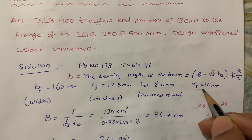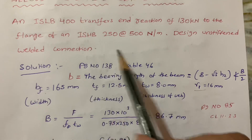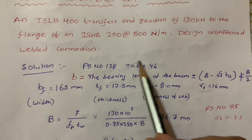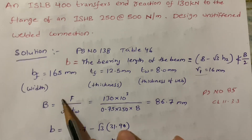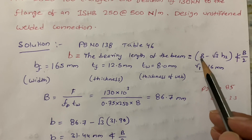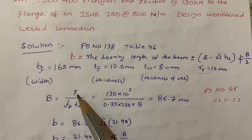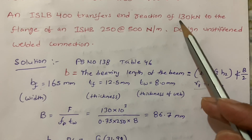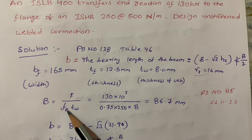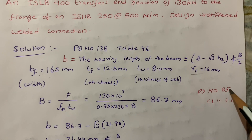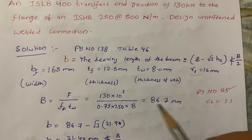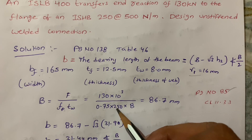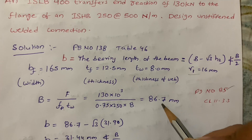R1 is the radius of the root for ISLB 400, available in the steel tables book. For the b value, the formula is: force divided by Fp into thickness of the web. The force is 130 kN as given, and Fp (permissible stress) from page 85, clause 11.3.3 is 0.75 into FY, which equals 0.75 × 250. The web thickness is 8 mm, giving a b value of 86.7 mm.